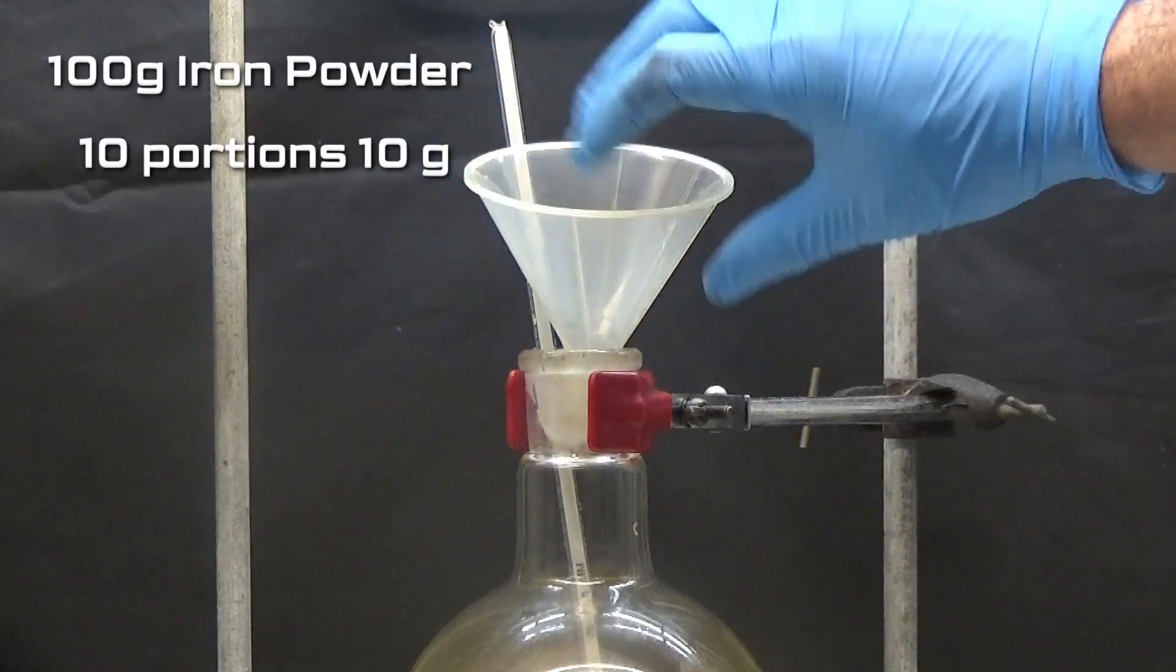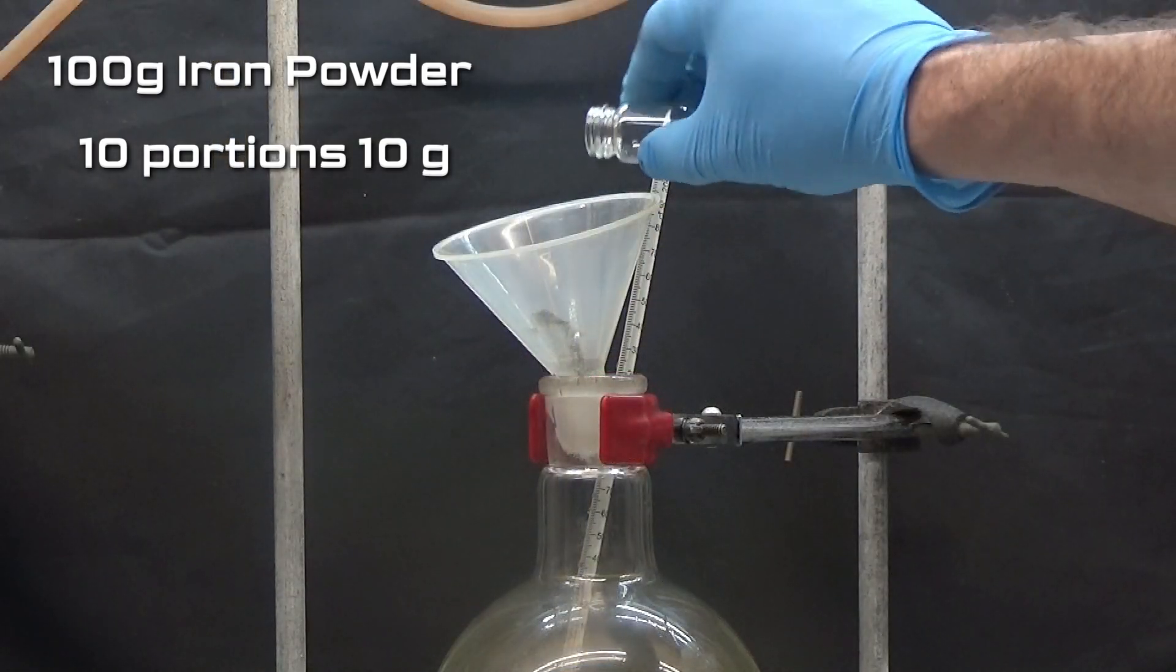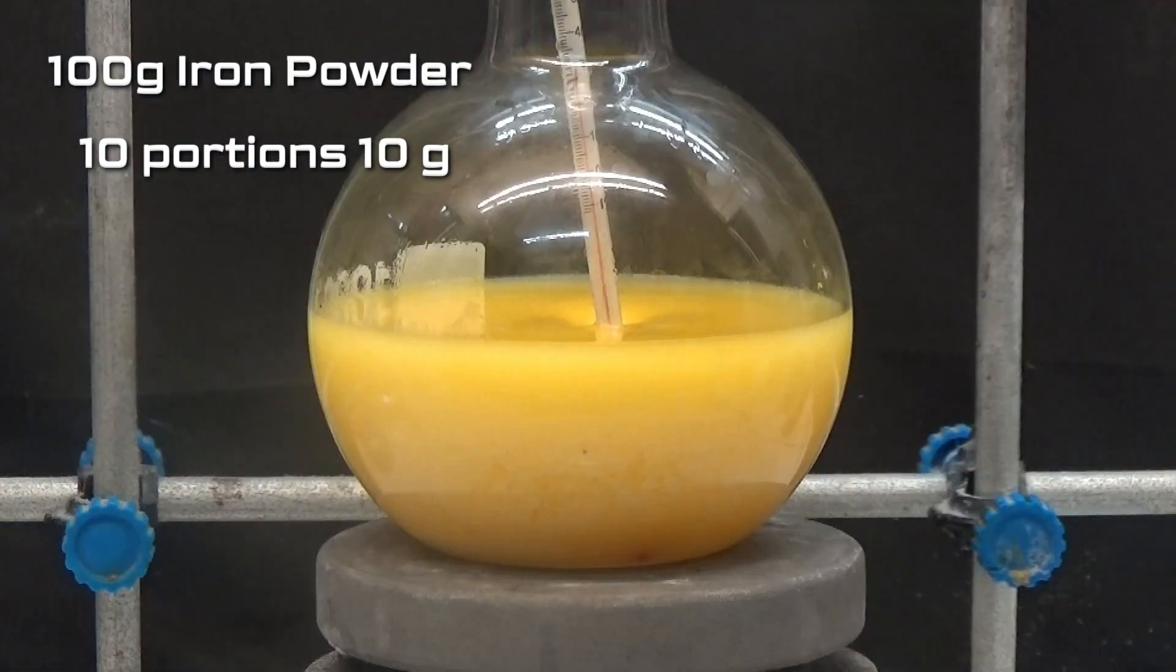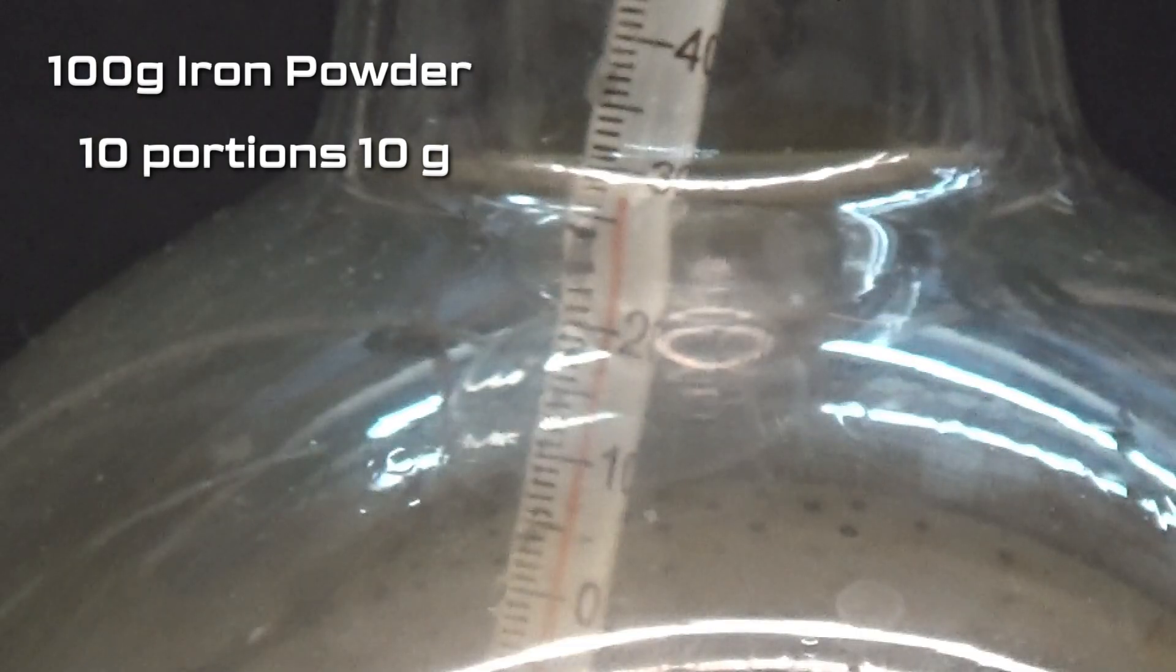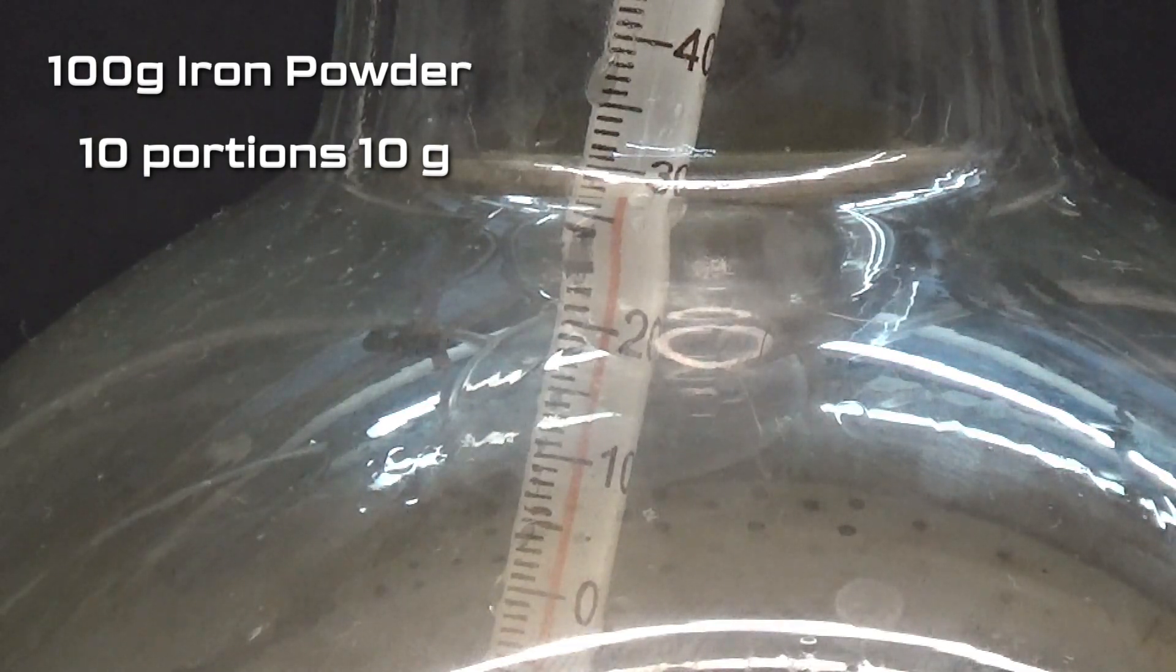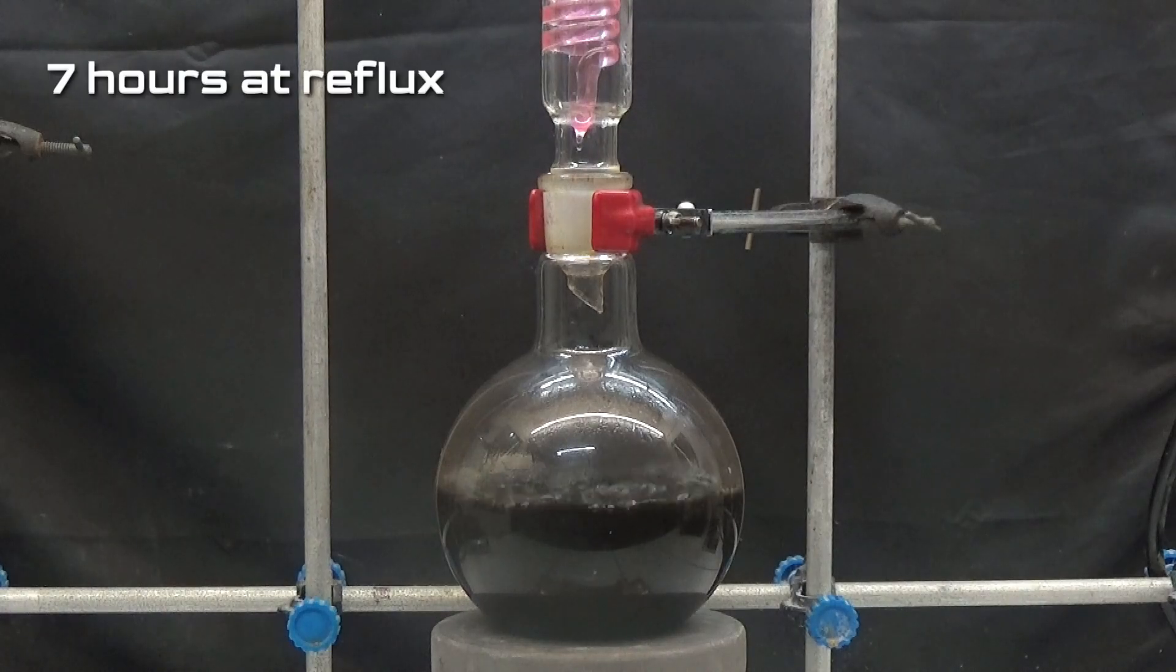With strong agitation add 100 grams of iron powder in portions of 10 grams with difference of one minute. While adding the iron, control the temperature to be above 40 degrees. Once all the iron has been added, heat for 7 hours at reflux.